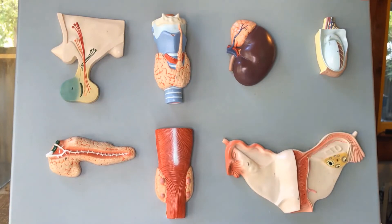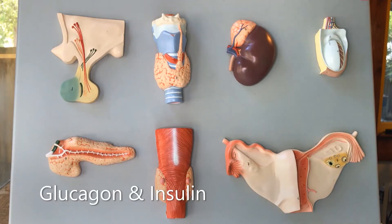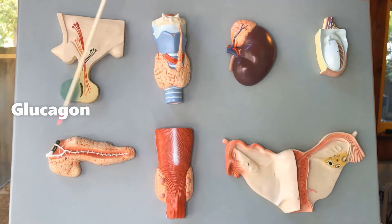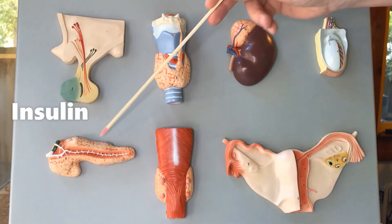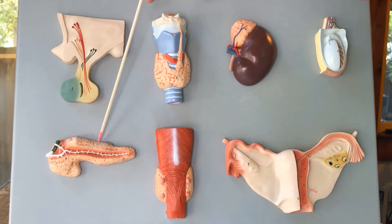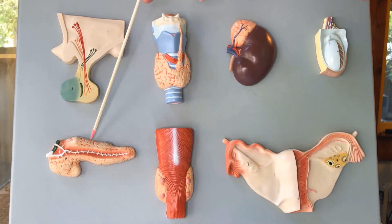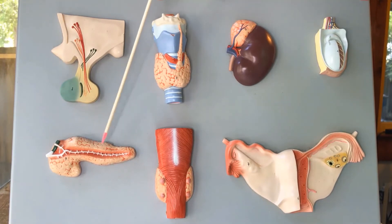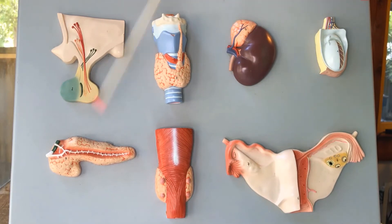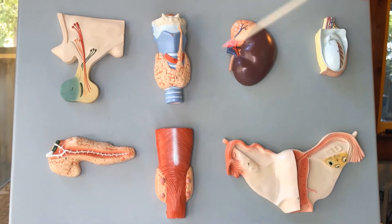The two endocrine hormones of the pancreas are glucagon and insulin. Glucagon is made by alpha cells and insulin is made by beta cells. Glucagon raises your blood sugar levels and insulin lowers blood sugar levels. So after you have a big meal, you're going to produce a lot of insulin to get that blood sugar stored away as glycogen.